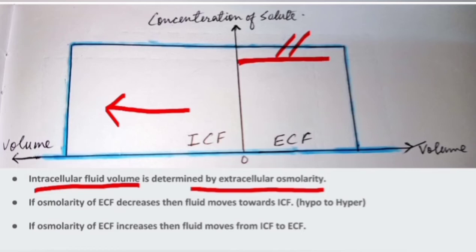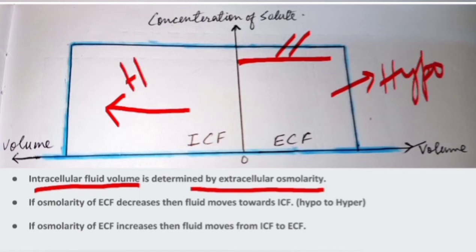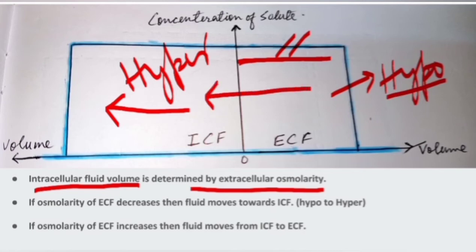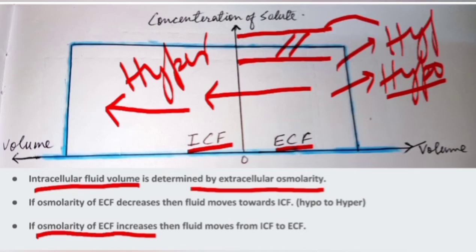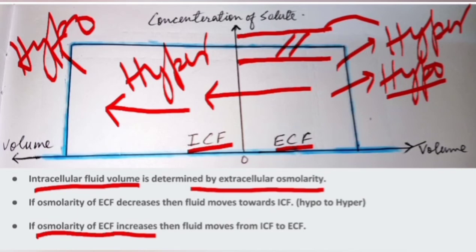If the extracellular osmolarity goes down, the extracellular compartment becomes hypotonic and the intracellular becomes hypertonic, so water moves from the extracellular fluid to the intracellular fluid. Conversely, if the osmolarity of the ECF goes up, the ECF becomes hypertonic, so fluid moves from the intracellular fluid compartment to the extracellular fluid compartment.